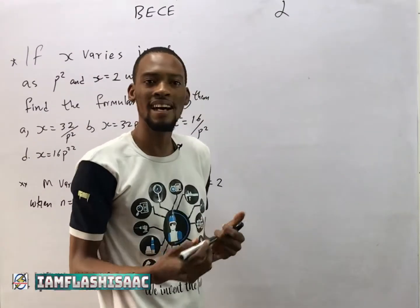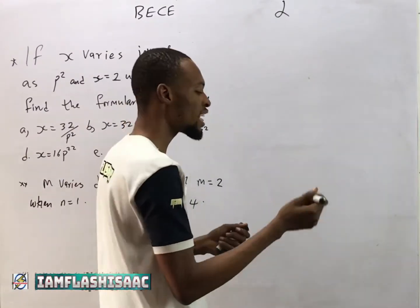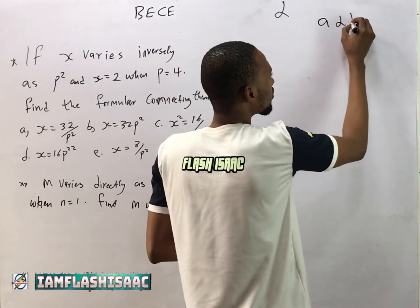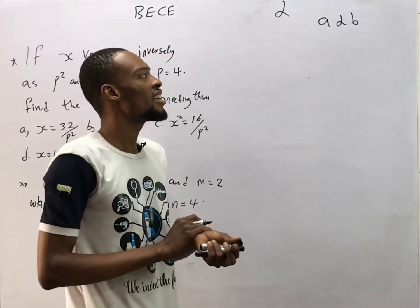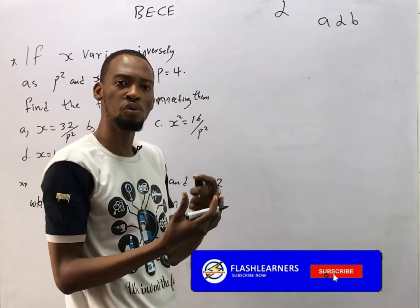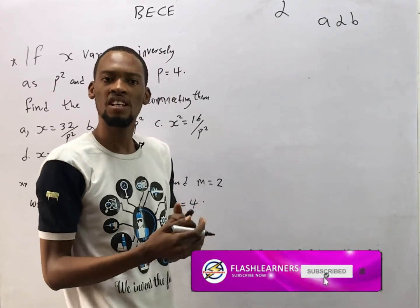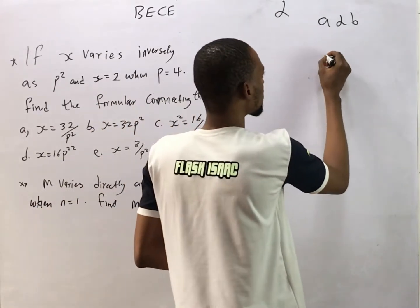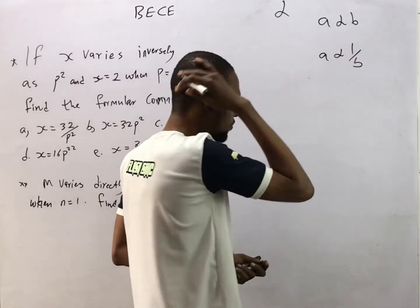If a is directly proportional to b, this is how you represent it: a ∝ b. If a is inversely proportional to b, or a varies inversely as b, this is how you represent that: a ∝ 1/b.